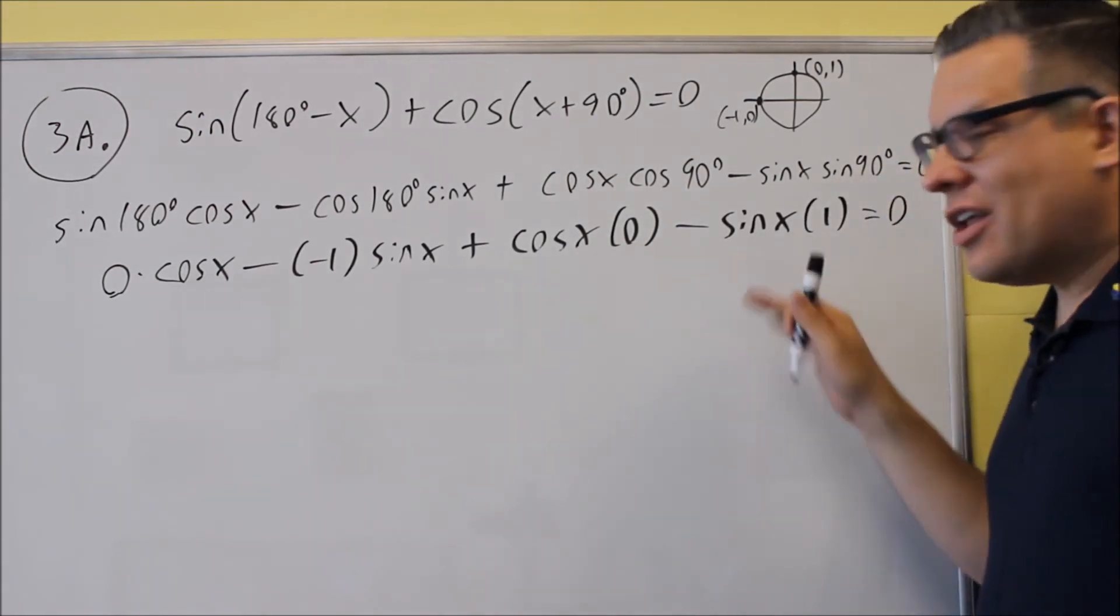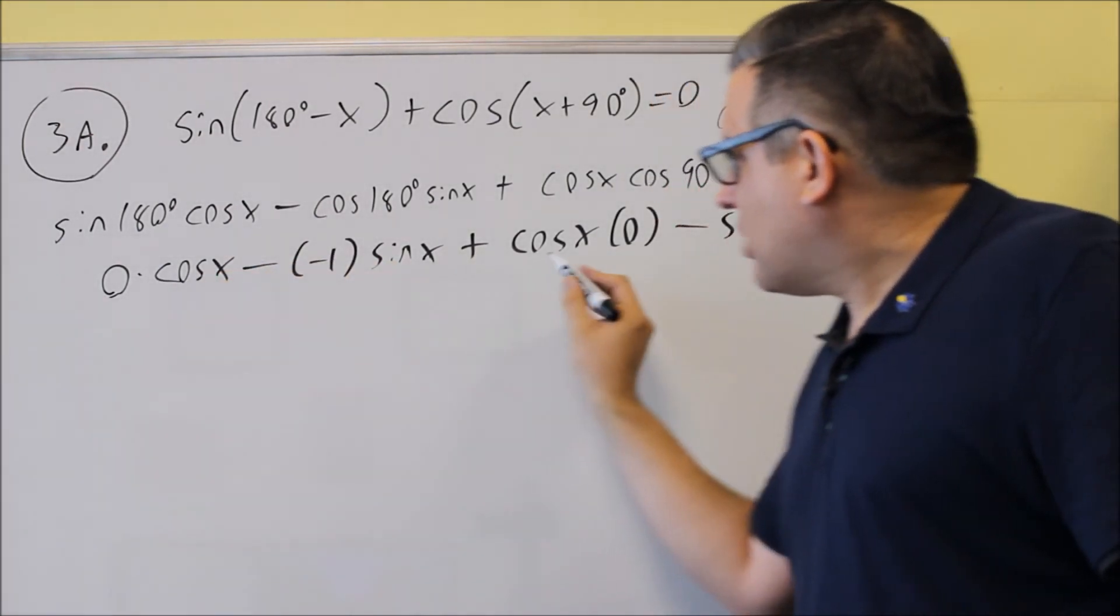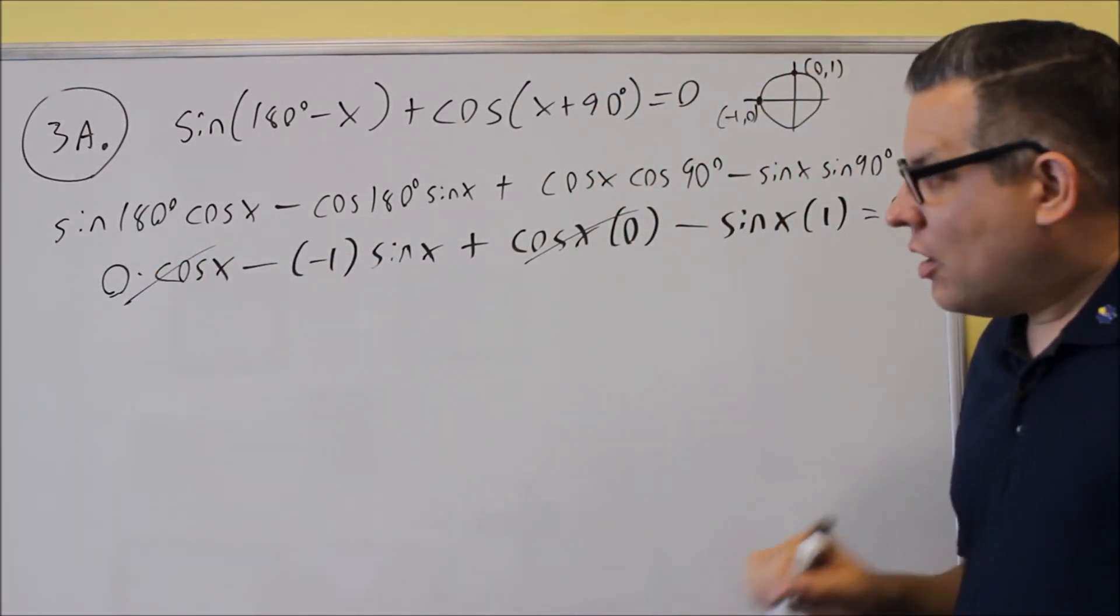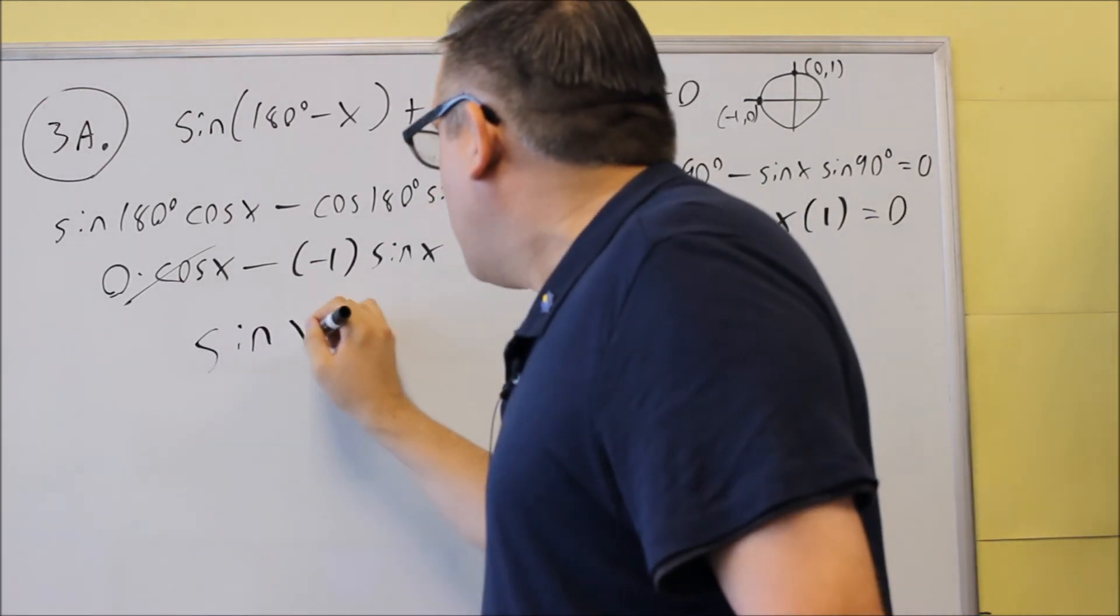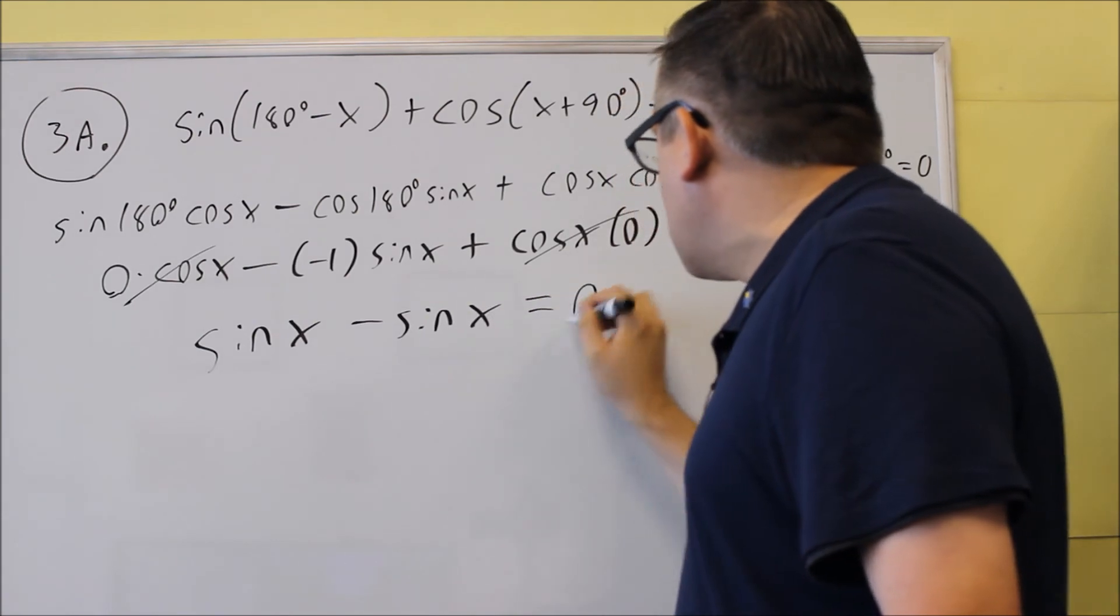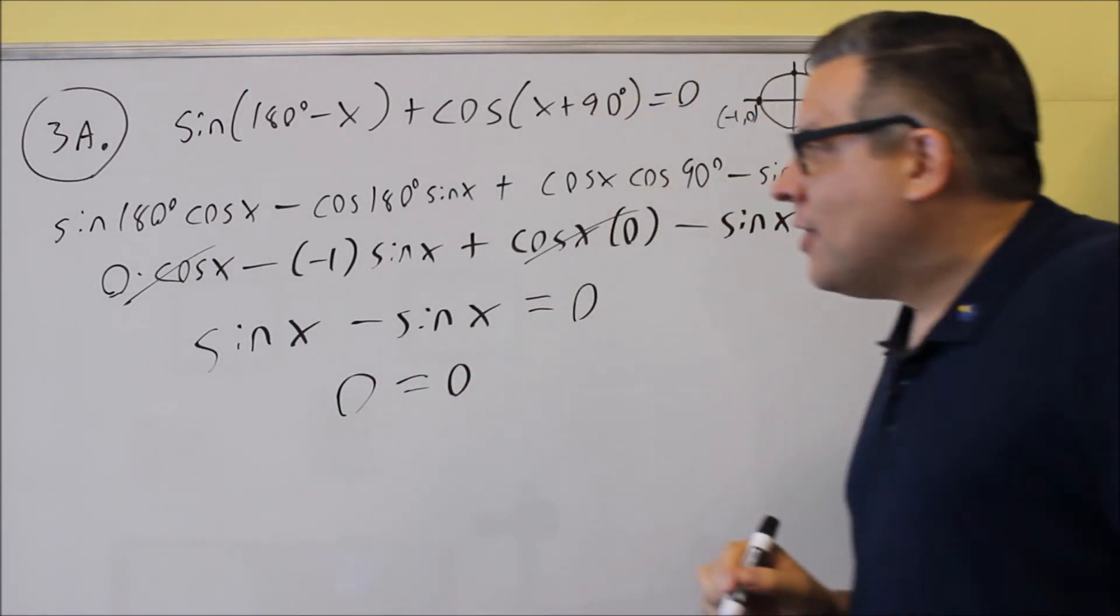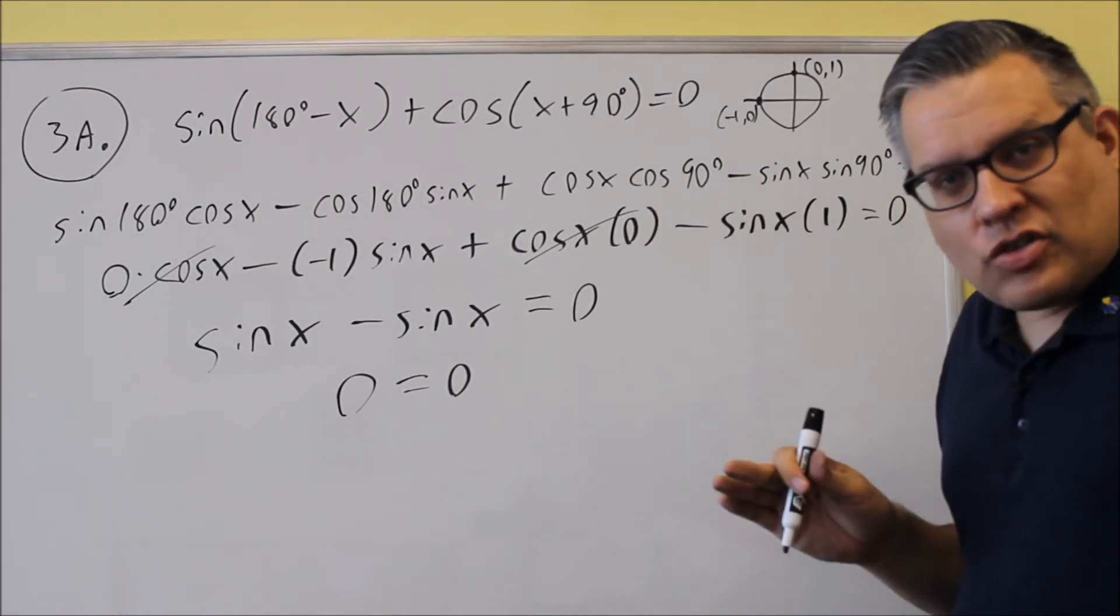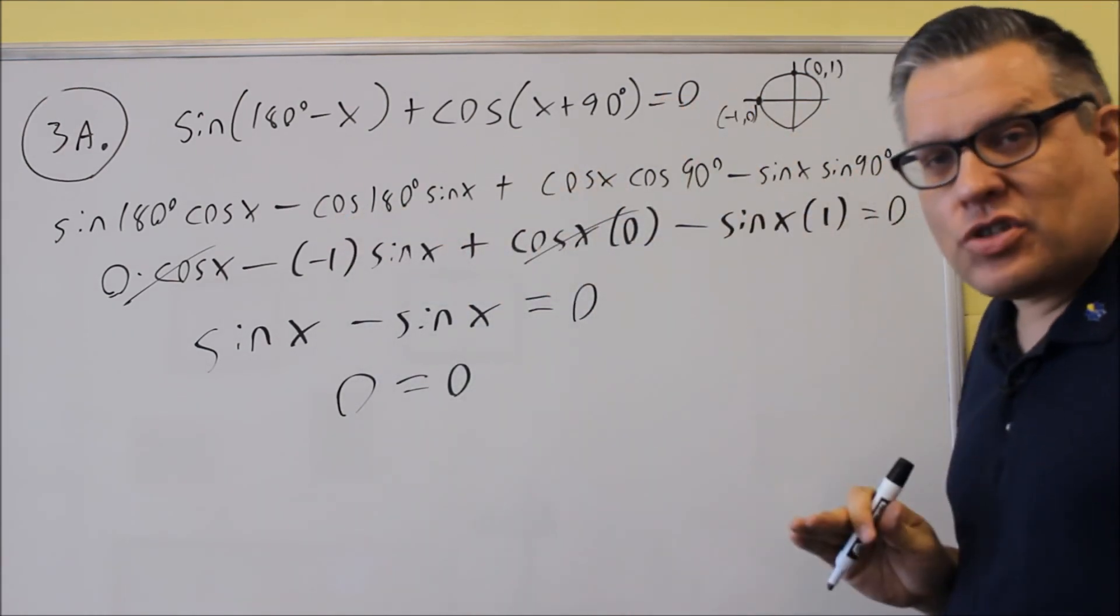And so now we get this. So just a matter of simplifying everything, the zero times anything, these are just going to go away because zero times anything is zero. Negative times negative is positive, I get positive sine x. This cancels and I have another minus sine x and sine x minus sine x will be zero. So we do get both sides equal in that case. So you are establishing an identity.